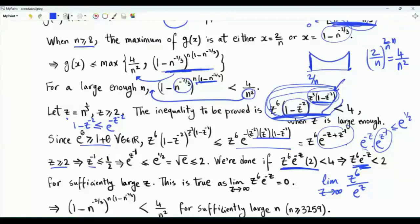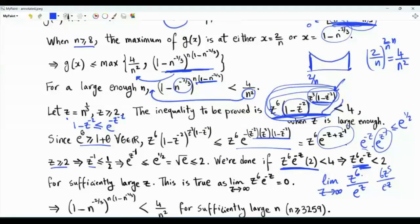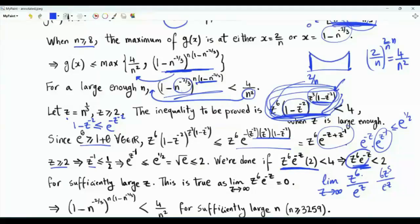The limit as z → ∞ of z^6 / e^z is zero: we have polynomial growth in the numerator and exponential growth in the denominator. Applying L'Hôpital's rule six times, we eventually get 6! in the numerator and e^z in the denominator, whose limit is zero. Since z^6·e^(-z) → 0, it must eventually be less than 2, so there is a threshold above which the inequality holds. Mathematica confirms that n > 3259 suffices, but it is enough to know some such threshold exists.